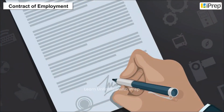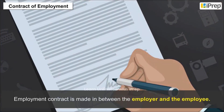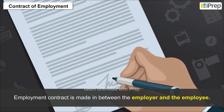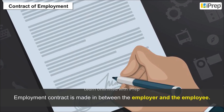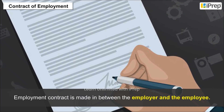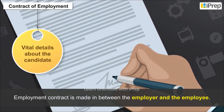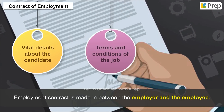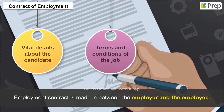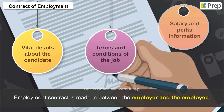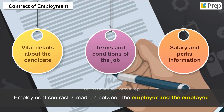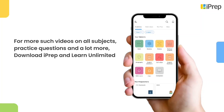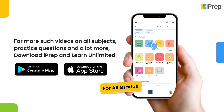An employment contract is made between the employer and the employee. This document contains certain vital details about the candidate, terms and conditions of the job, salary and perks, and related information.